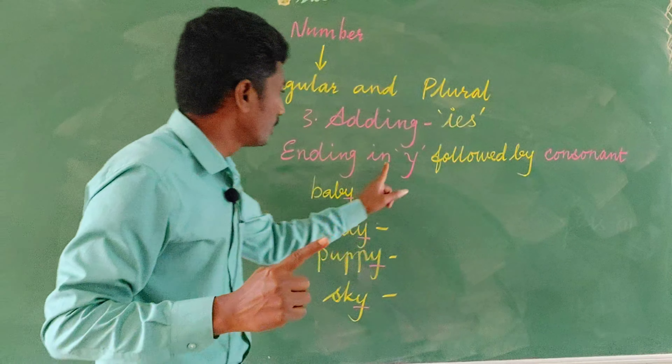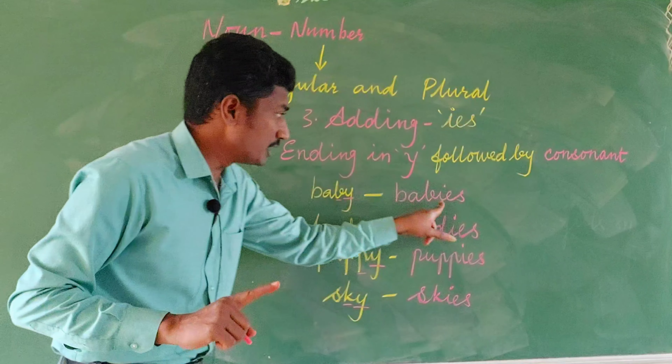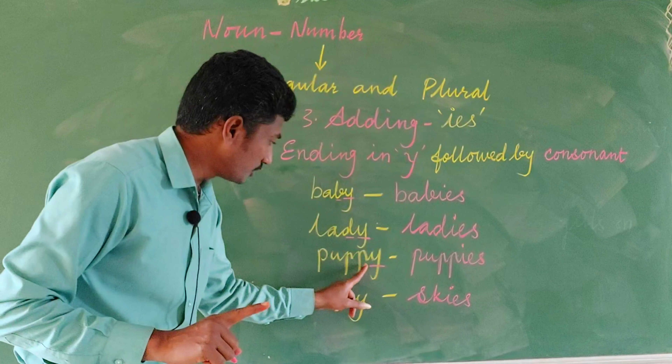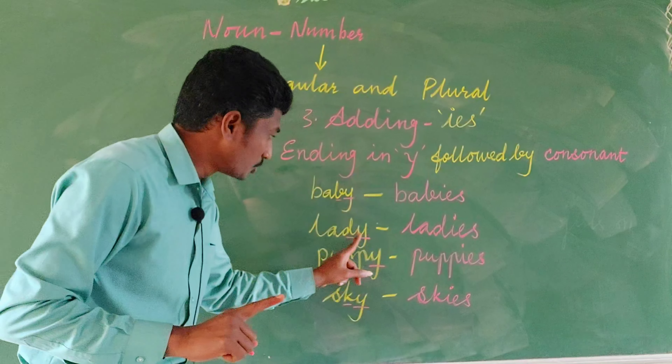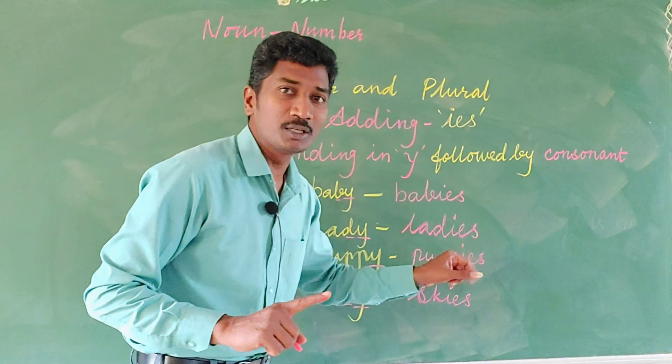It is very clear: when the 'y' is following the consonant, not simply by looking at the 'y' and adding 'ies' — that will be wrong. I will tell you the exceptions, why we should not add. When it is following a consonant, then we add 'ies'. You see here — it is a consonant, it is a consonant. So if the 'y' is following this consonant, we add 'ies' to make plural.